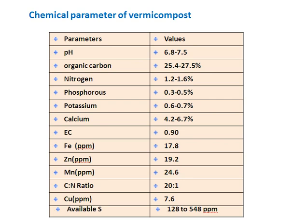The worm's digestive system creates environments that allow certain species of microorganisms to thrive, helping create a living soil environment. Important chemical parameters of vermicompost include pH, organic carbon, nitrogen, phosphorus, potassium, calcium, iron, zinc, manganese, copper, available sulphur, and C:N ratio. All these nutrients increase soil fertility and productivity. The C:N ratio of vermicompost is narrow at 20:1, which is very favorable for increasing the microbial activity of the soil.